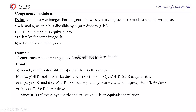Example: congruence modulo N is an equivalence relation R on Z. For reflexivity: x minus x = 0, and 0 is divisible by N, which implies (x, x) belongs to R — so R is reflexive. For symmetry: if (x, y) belongs to R, then x minus y = KN. Then y minus x = -(x - y) = -KN, which indicates (y, x) belongs to R. Therefore, R is symmetric.